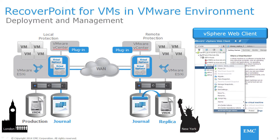The objects in blue in this diagram illustrate how RecoverPoint for VMs is deployed in the VMware environment. Architecturally, RecoverPoint for VMs consists of a VMware vCenter plug-in, a RecoverPoint write splitter embedded in the vSphere hypervisor, and a virtual appliance, all fully integrated in a VMware ESXi server environment. RecoverPoint for VMs replicates locally or remotely over WAN, sync, or async.